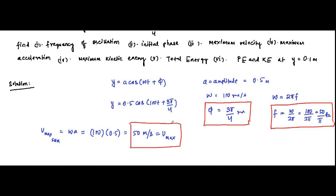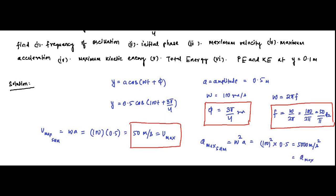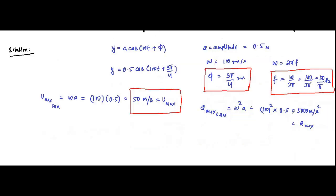So V_max = 100 × 0.5 = 50 meters per second. Then we find maximum acceleration. The maximum acceleration in SHM is equal to ω²A = 100² × 0.5 = 10000 × 0.5 = 5000 meters per second squared. That is the maximum acceleration.